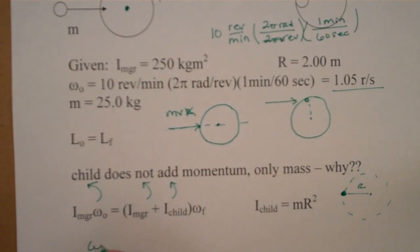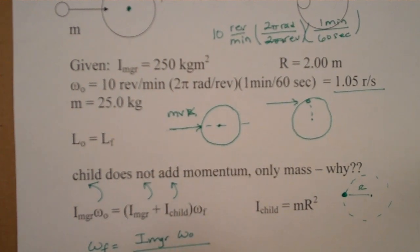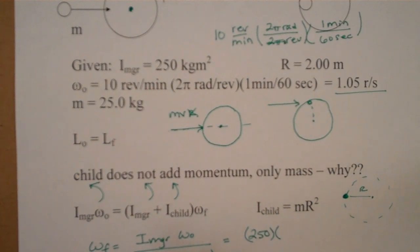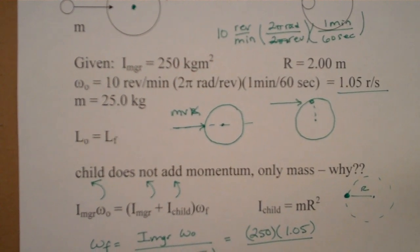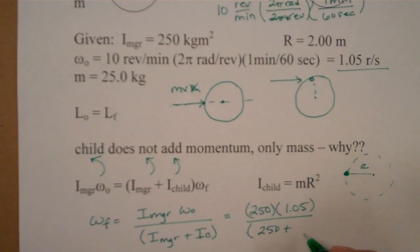So, to solve for omega final, it's going to be I of the merry-go-round, MGR, times its initial speed, divided by the new moments of inertia. And that's two things now rotating instead of one. So, the I of the merry-go-round was given as 250. The initial speed was given as 1.05 radians per second. The I of the merry-go-round again is 250. And now we're having to add the I for the child.